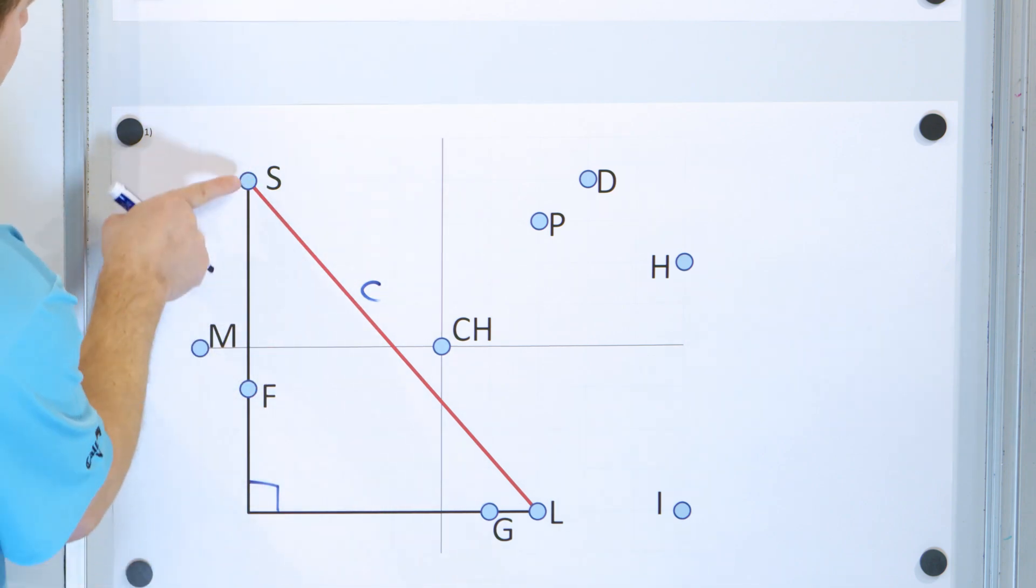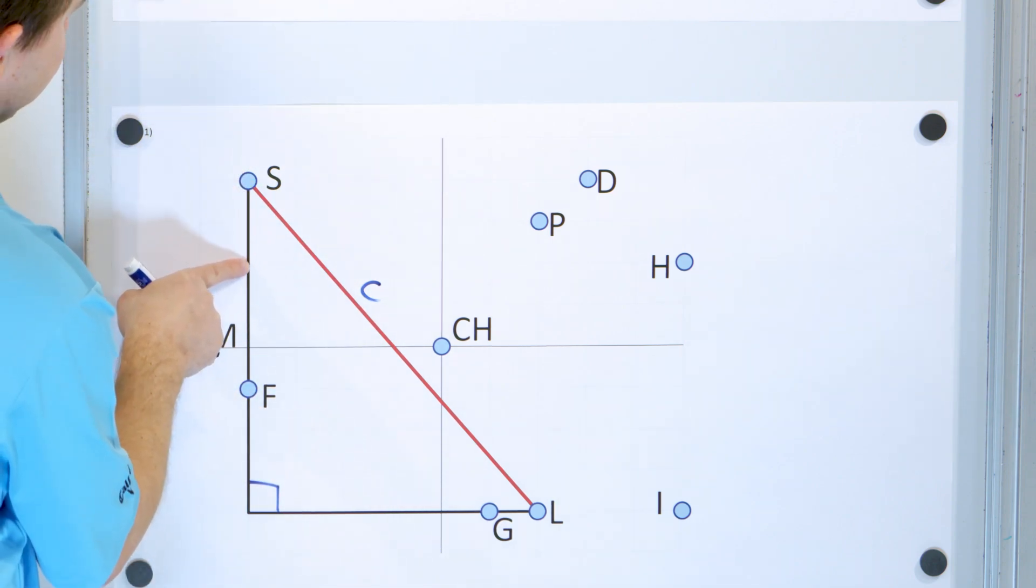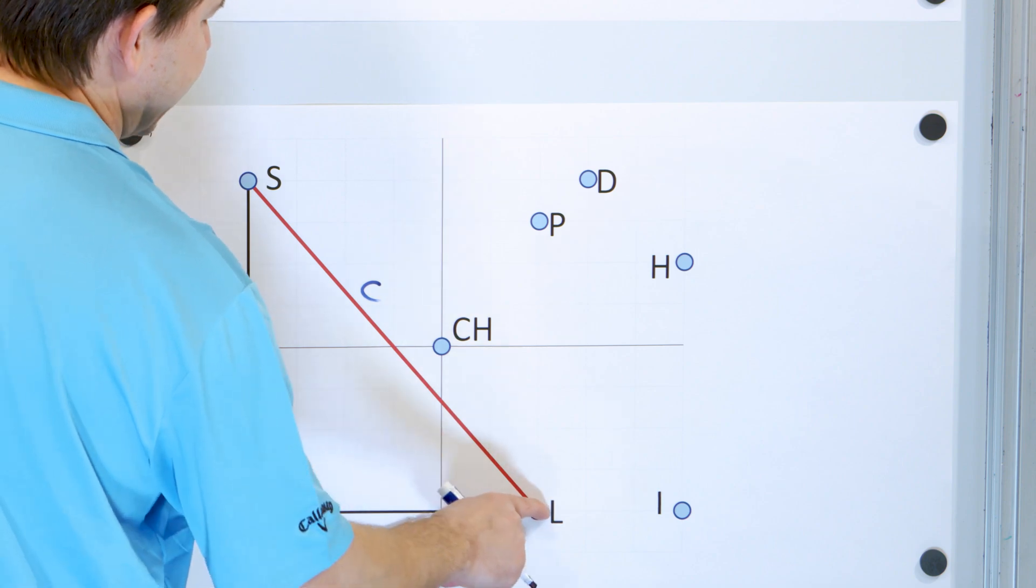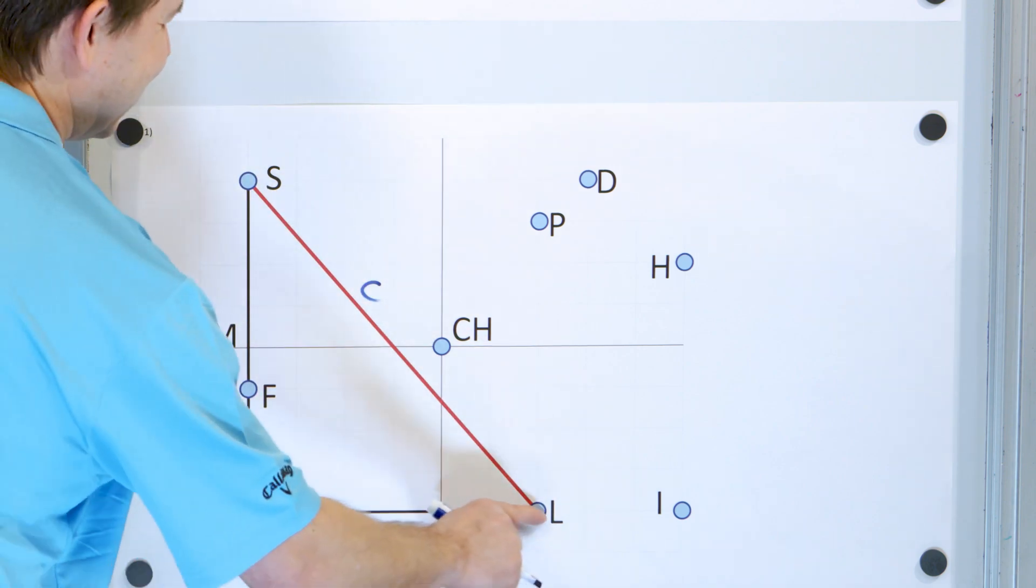So the distances of the other sides are one, two, three, four, five, six, seven, and eight. And the other side is one, two, three, four, five, six. So the distances are eight and six kilometers.